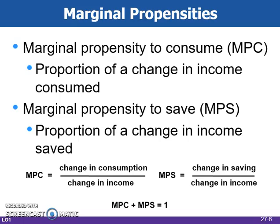Marginal propensity to consume, or MPC, is the fraction or proportion of any change in income that is consumed. You can find this by taking the change in consumption and dividing it by the change in income. This can be seen in column 6 in the previous table. Marginal propensity to save, or MPS, is the fraction or proportion of any change in income that is saved. You can find the MPS by taking the change in savings and dividing it by the change in income. This can be found in column 7. Note that MPC plus MPS equals 1.